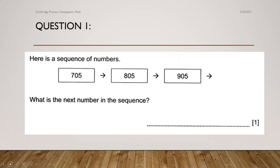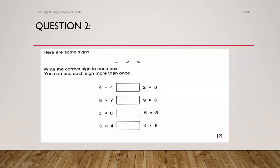Let's move to the second question. Here are some signs — they have given three signs: the equal sign, the greater sign, and the less sign. Write the correct sign in each box; you can use each sign more than once. The first thing you have to do is multiply these and find your value — then it's much easier to identify the sign. 4 times 4 is 16, and 2 times 8 is 16. Both sides are similar, therefore I can use the equal sign.